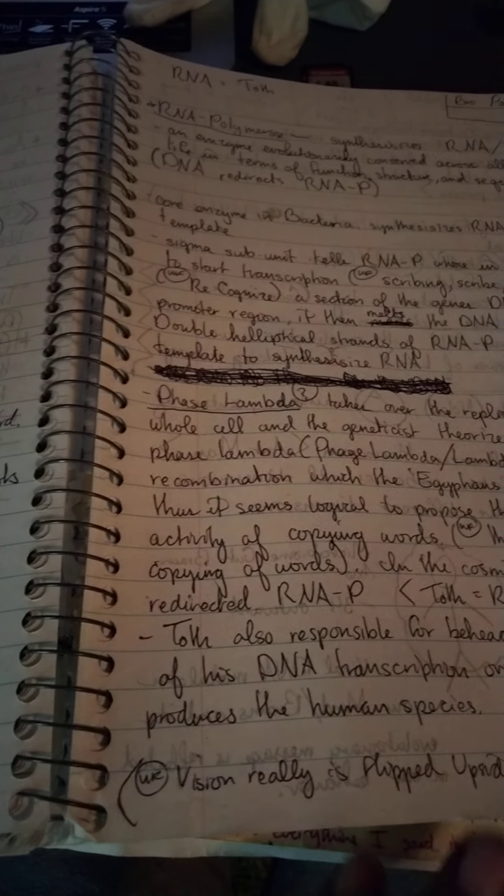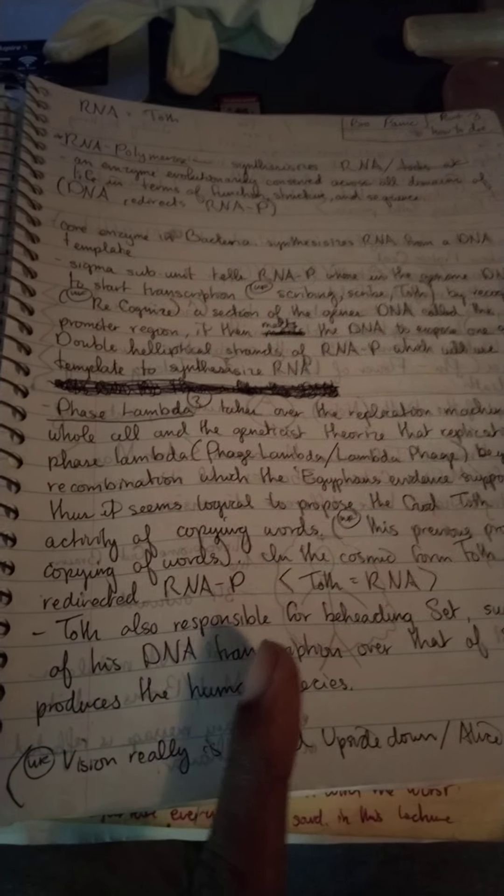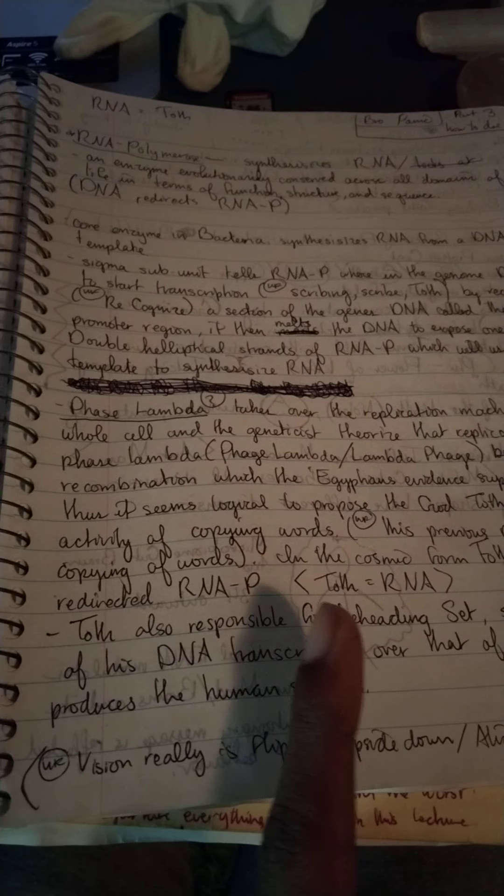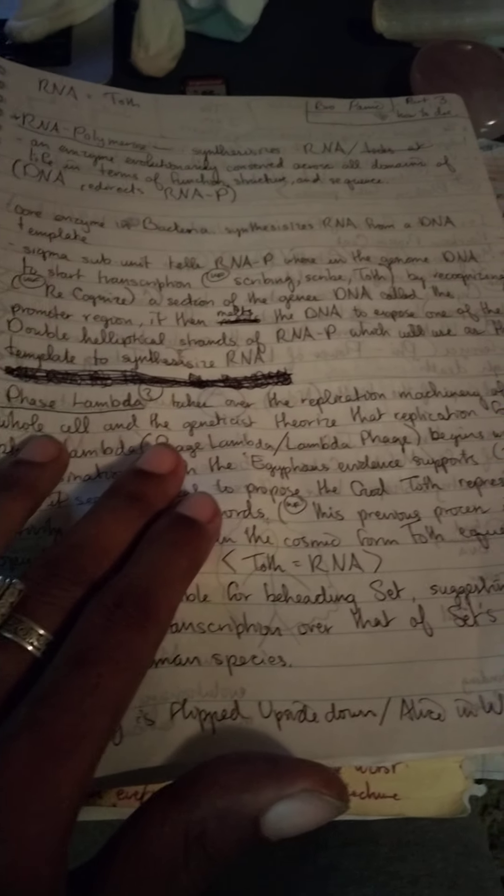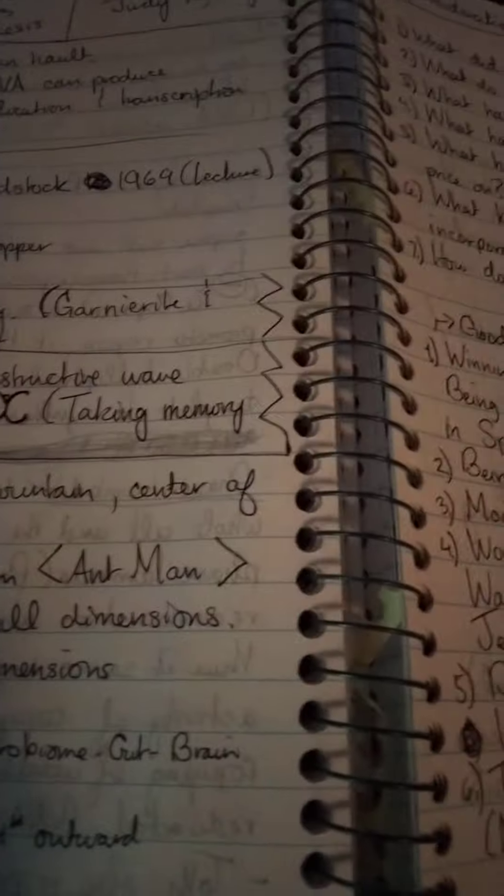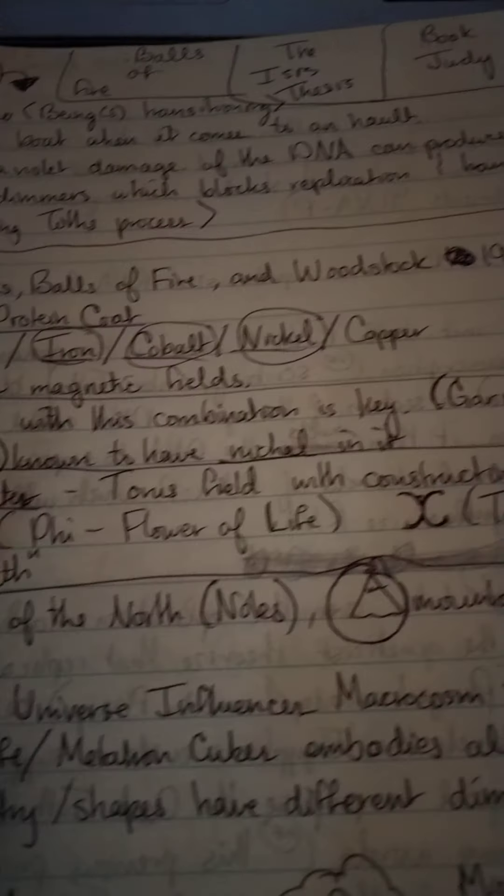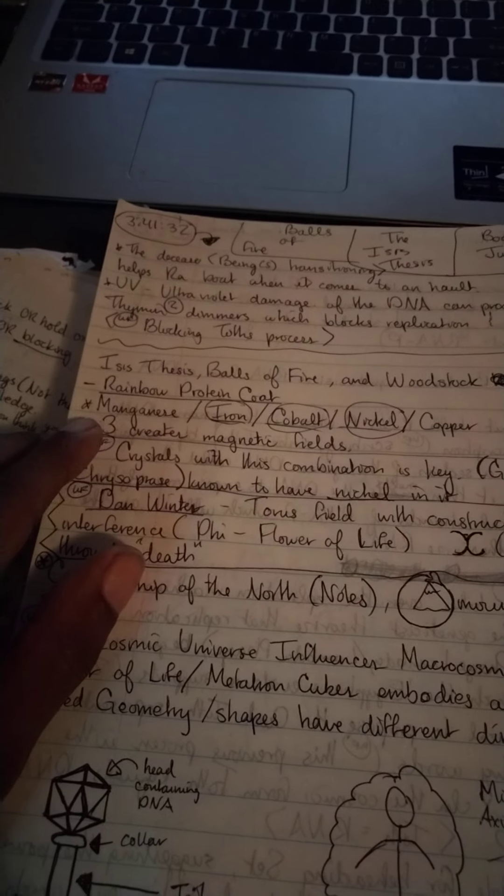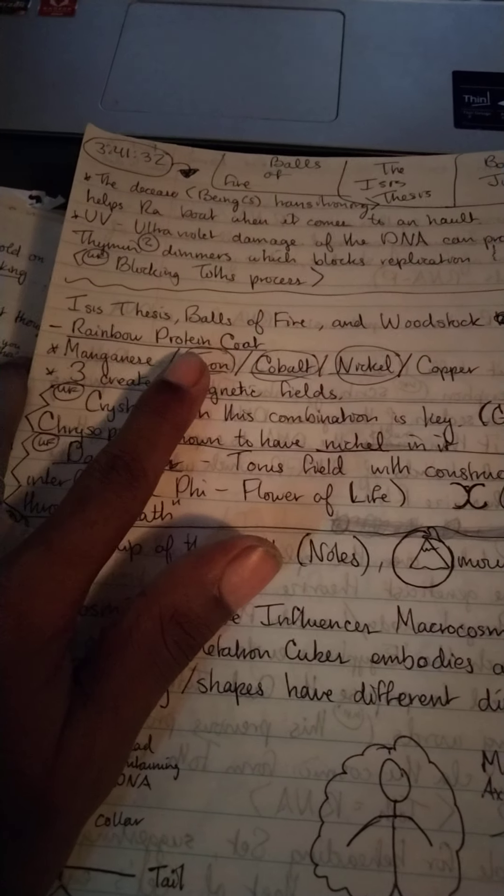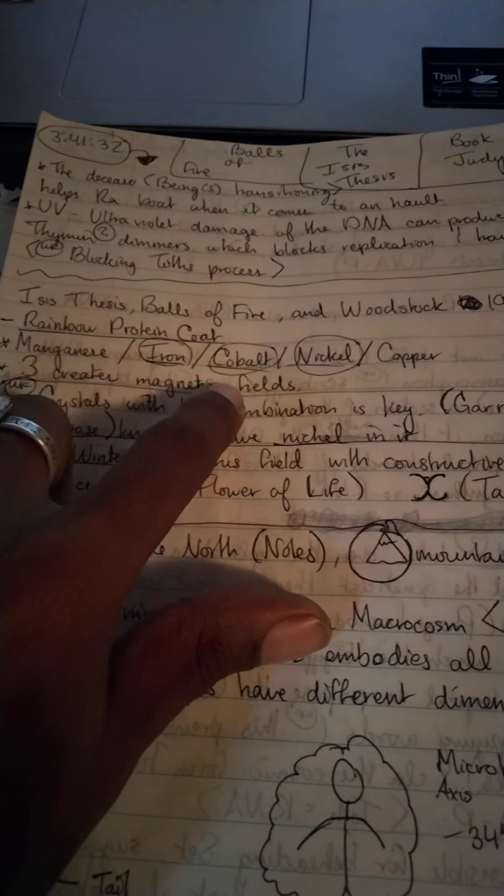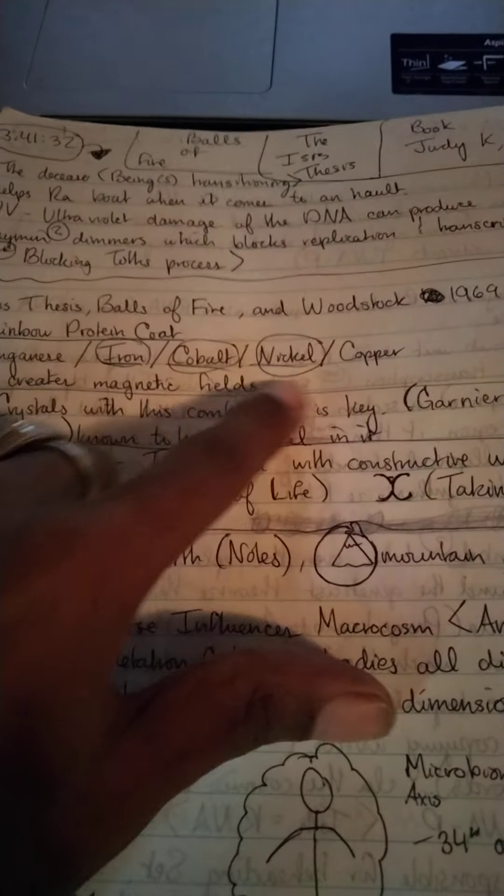Explaining how Thoth is connected with the RNA, talking about phage lambda, which has a rainbow protein coat made out of manganese, iron, cobalt, nickel, and copper.